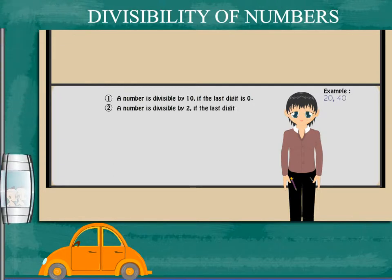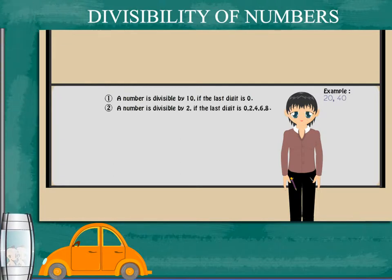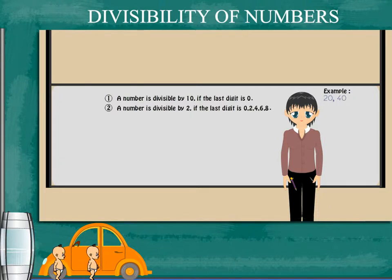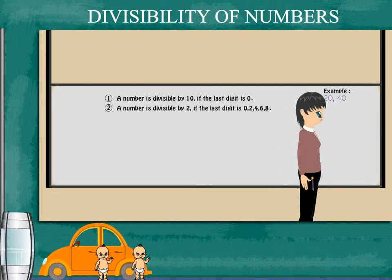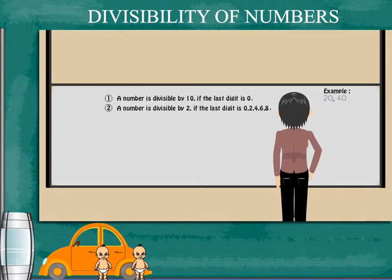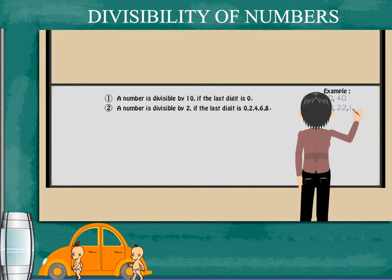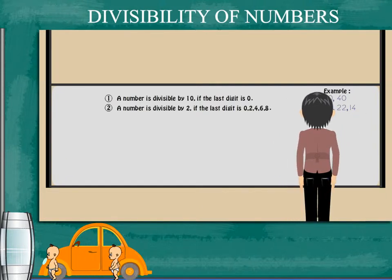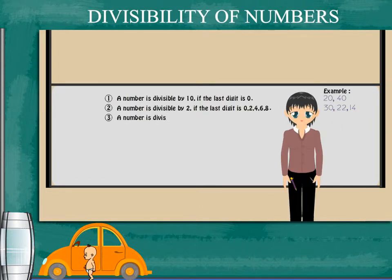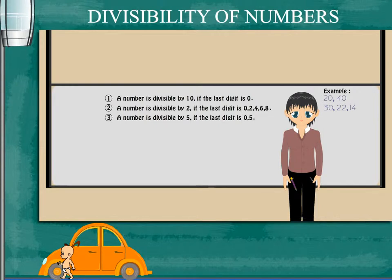The next rule is that a number is divisible by 2 if its last digit is 0, 2, 4, 6, or 8. Examples are 30, 22, 14, etc.